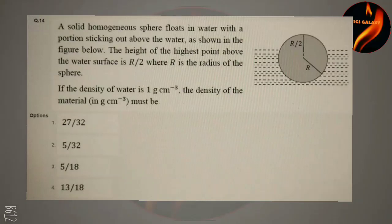Welcome again to our channel Physics Galaxy. This problem is from JEE 2022 physics paper. A solid homogeneous sphere floats in water with a portion sticking out above the water as shown in the figure. The height of the highest point above the water surface is R/2, where R is the radius of the sphere.